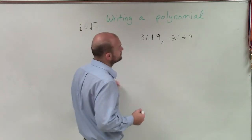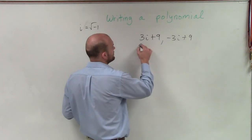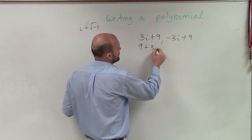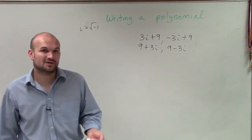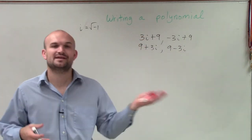Now, the other thing I would probably like to do is just probably rewrite these as 9 plus 3i and 9 minus 3i. And that makes it more look like, oh, there's how I see the conjugate plus or minus.